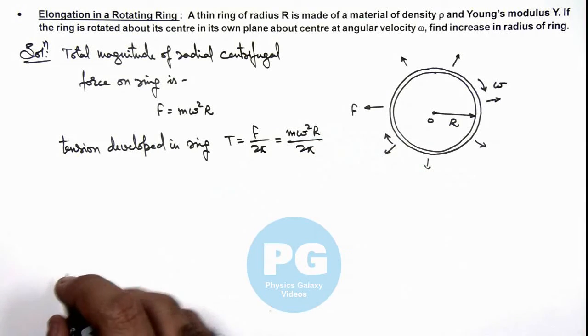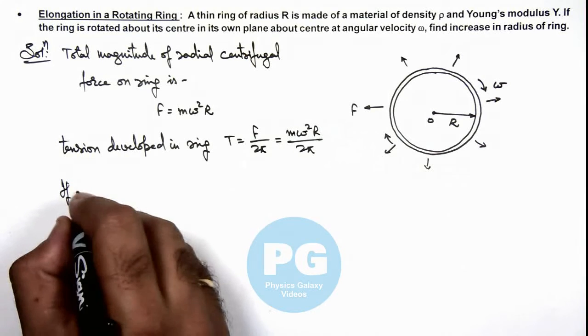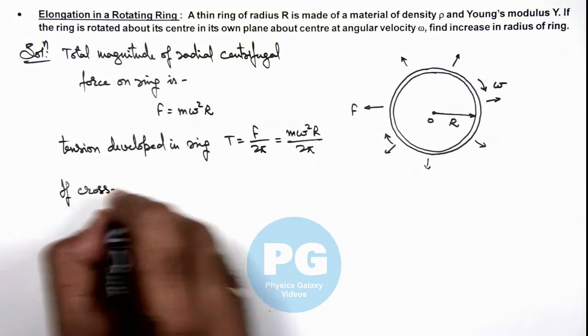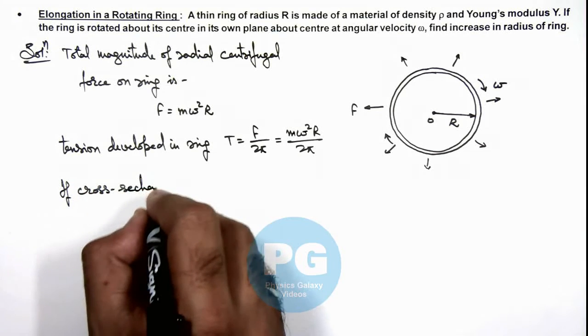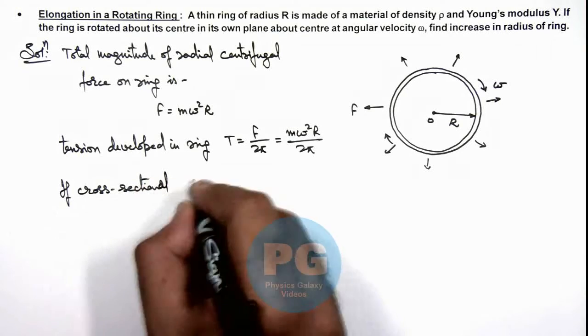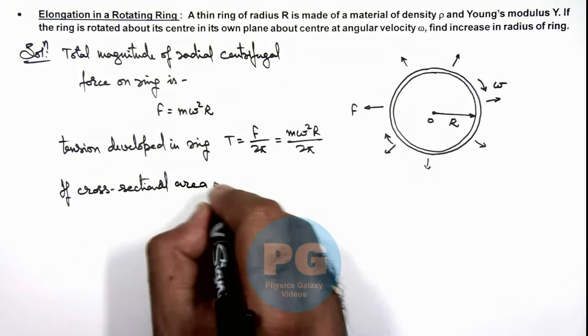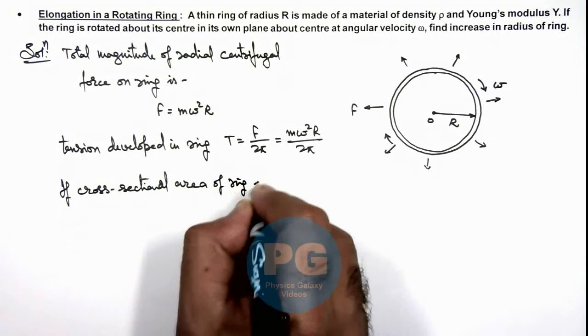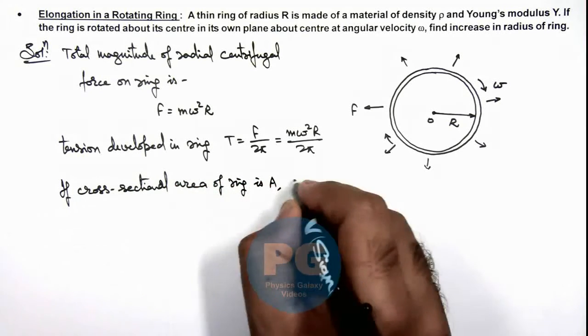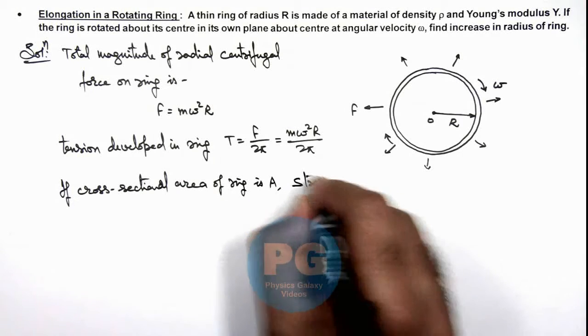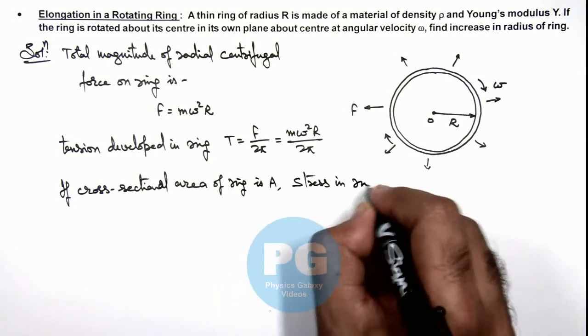And here, if cross-sectional area of ring is A, we can write the stress in ring.